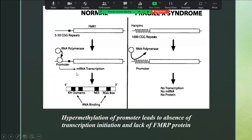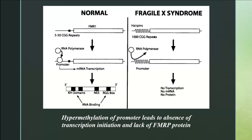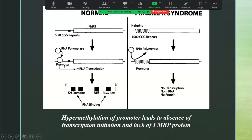The FMRP protein is an RNA-binding protein that helps transport certain mRNAs between the nucleus and cytoplasm. When repeats are more than 200, the promoter region gets methylated — hypermethylation occurs — resulting in absence of transcription initiation and therefore no FMRP protein produced. This is the full mutation mechanism. There is no transcription, no FMRP protein, and therefore these individuals have the characteristic features of Fragile X syndrome.